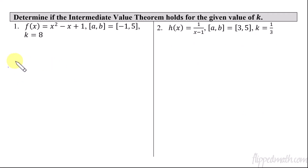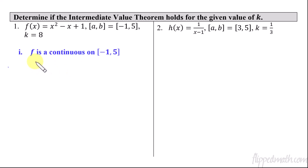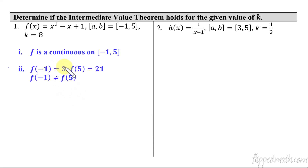On this first problem, we're looking at this function and trying to see — does it ever equal 8 on the interval from negative 1 to 5? We're not solving; we're using the Intermediate Value Theorem to prove that the function has to equal 8 on the interval. The first thing we need to show is that f is continuous on negative 1 to 5. This is just a parabola — a polynomial — so polynomials are continuous. That's our first condition. Next, we need to show the beginning and end of the interval have different y values, so we plug in negative 1 and positive 5.